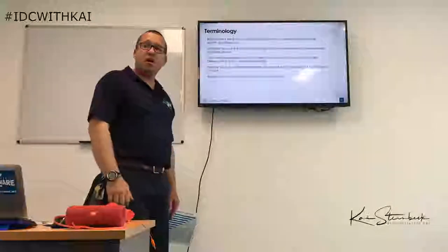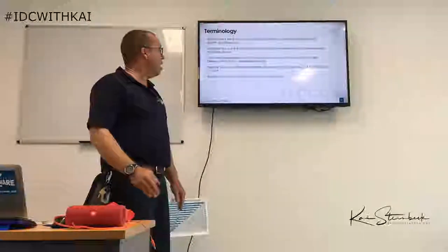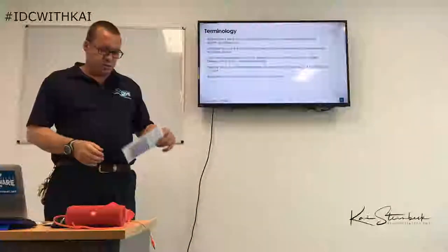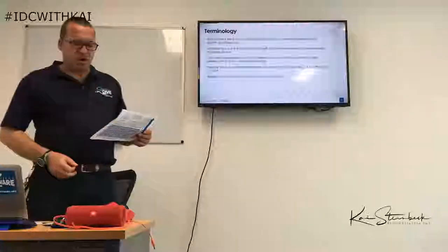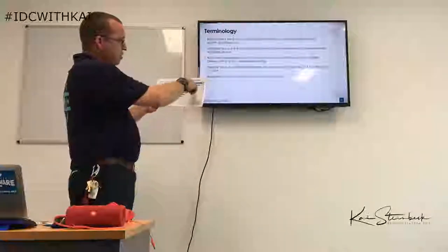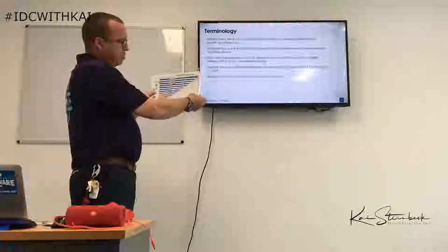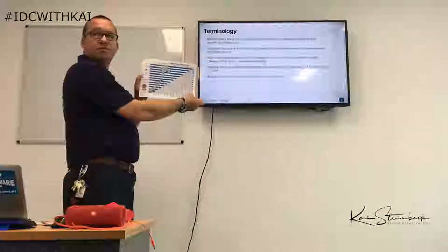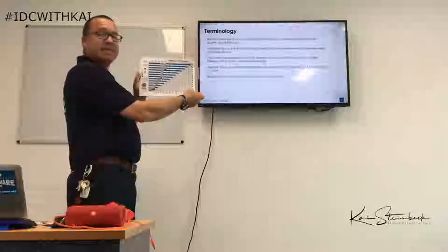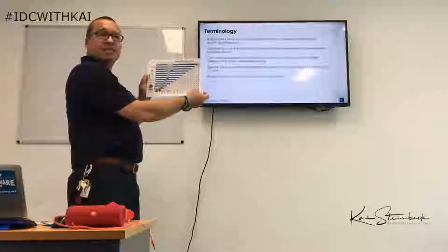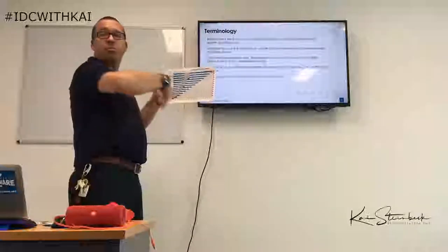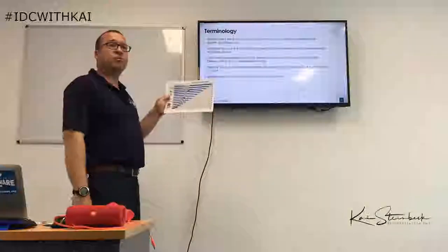A repetitive dive is a dive within six hours of a previous dive. Looking at our surface interval table, the absolute maximum at the bottom is 3 to 6 hours — so after a 6-hour surface interval, even if you were in pressure group Z, you would be completely back to normal.